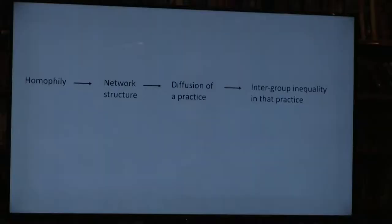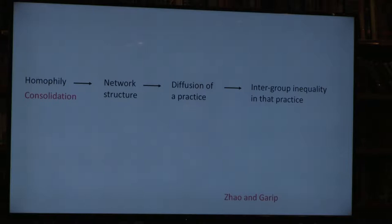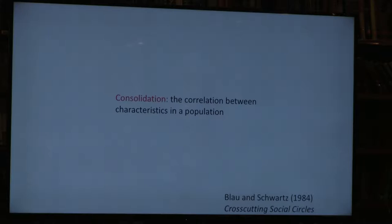The paper with Paul is the backbone of what we're doing with Linda. In that paper, the logic is: there's a mechanism—homophily—that affects network structure, which then affects diffusion of a practice and intergroup inequality in that practice. But homophily is not the only mechanism that can affect network structure. Another mechanism we're considering here is consolidation—basically the correlation between different characteristics in a society. In a highly consolidated society, if you tell me your income, I can guess your education, where you live, and other characteristics. We left this out in the paper with Paul because it was fixed in the GSS data.